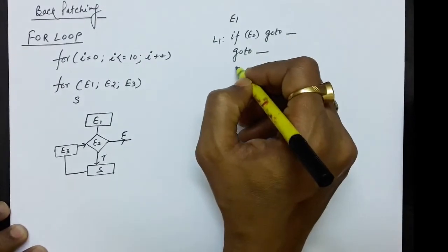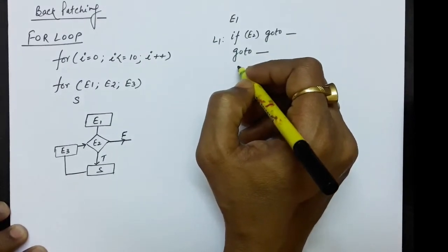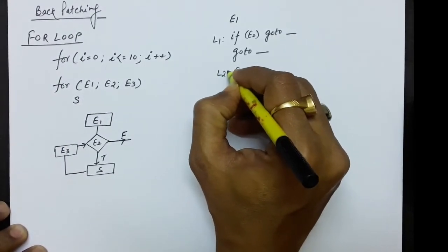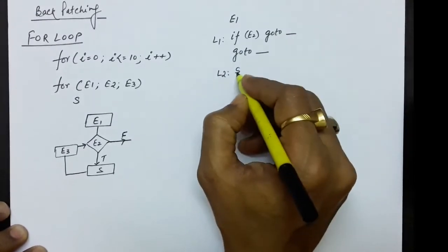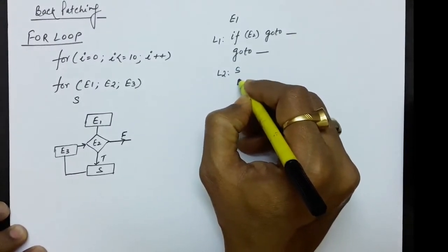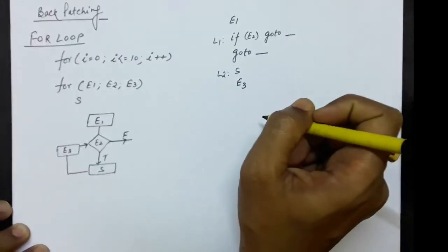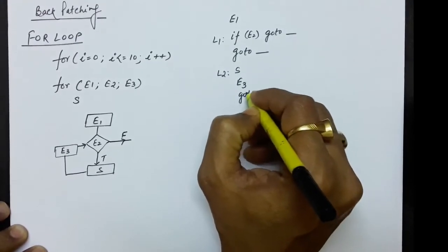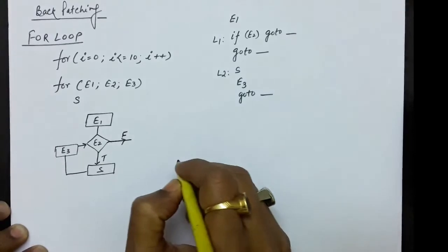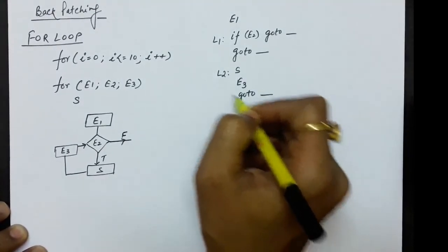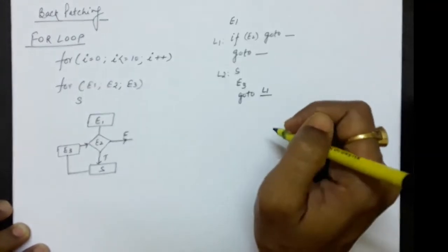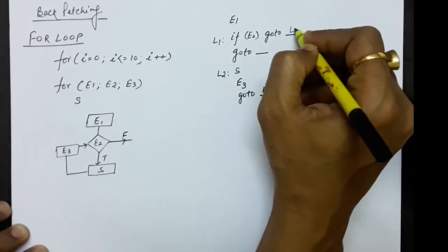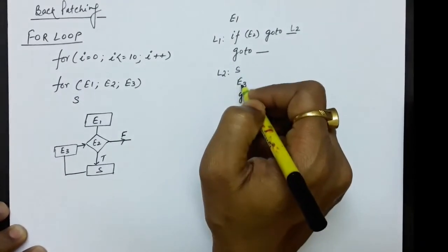If the condition is true, we execute statement S. Let's say this statement is at level L2. After executing S, we do the increment or decrement part E3. After that, we go to the condition check once again. The condition check is done at L1, so in the backpatching we write L1 here. If the condition is true, we go to L2 to execute statement S followed by E3.